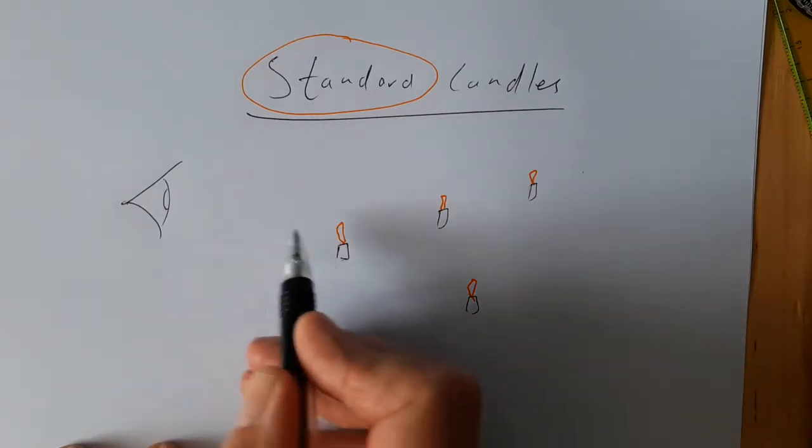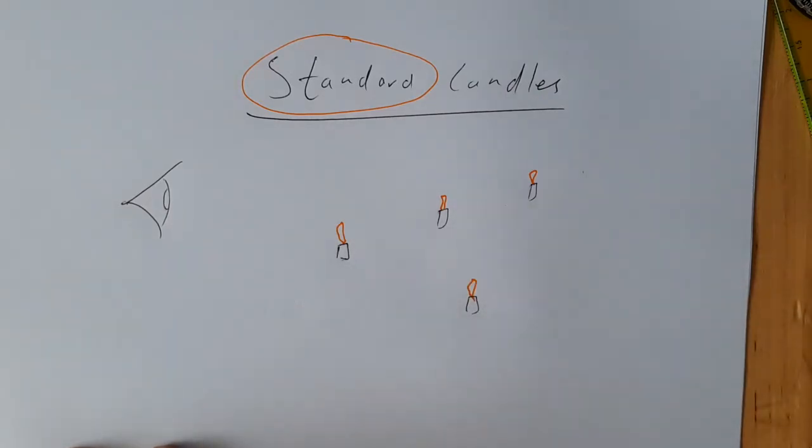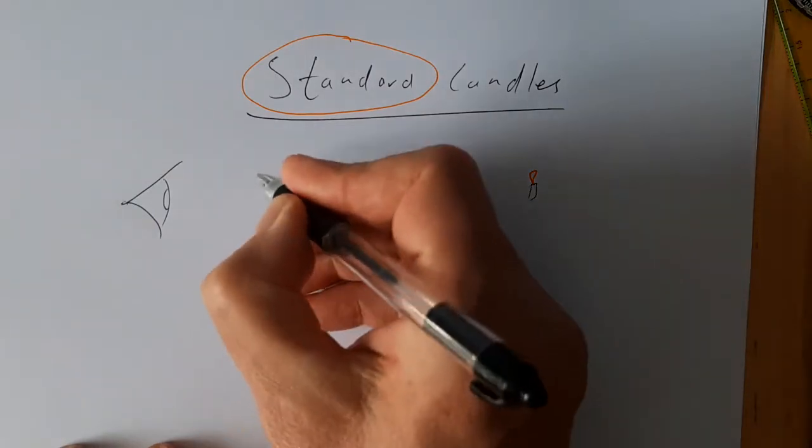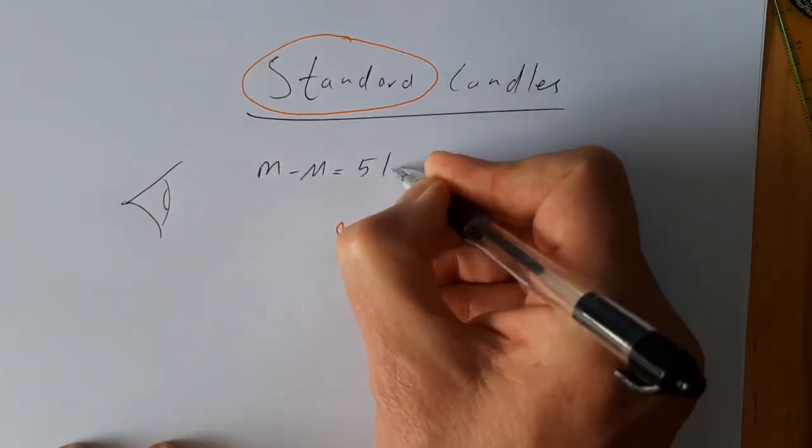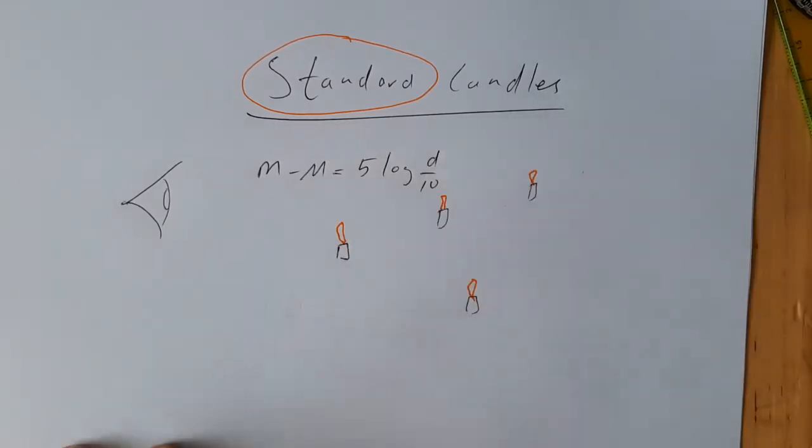More importantly, if we actually manage to measure the amount of light, the brightness of the light, the amount of energy arriving per meter squared, then we can use the inverse square law to actually then calculate distances to these stars.